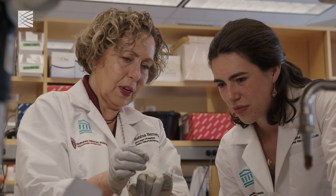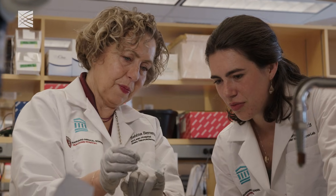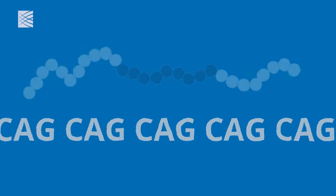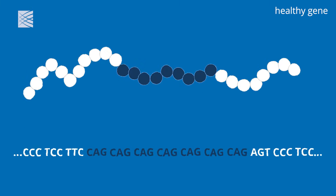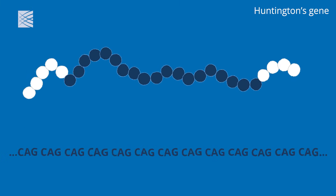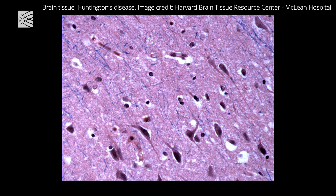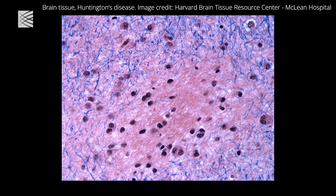Huntington's disease is caused by a DNA repeat in which the short DNA sequence CAG is repeated over and over again a variable number of times. Most of us inherit a form of the gene with 15 to 30 CAG repeats, but people who inherit a form with 40 or more CAG repeats will go on to develop Huntington's.